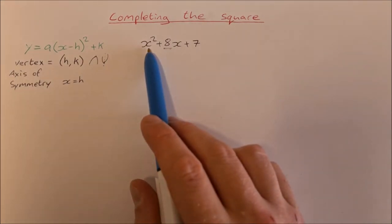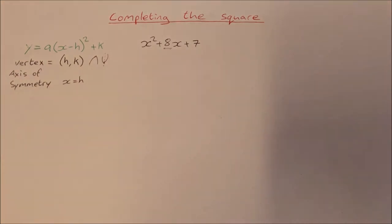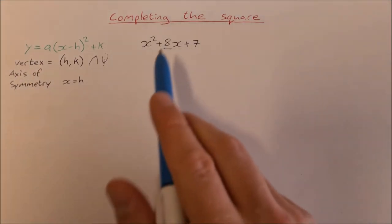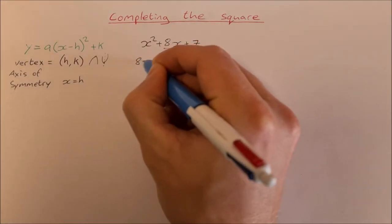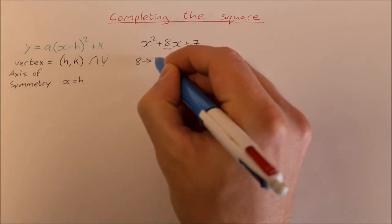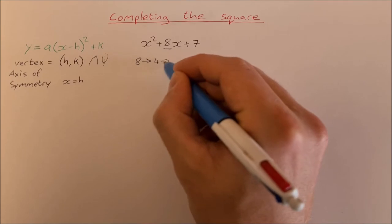I'm going to take a look at this one here, x² + 8x + 7, and complete the square and write it in completed square form. To do that, you take the coefficient of x, which is 8. First thing you do is half it, so half of 8 is 4. Then you square it, so we square 4 to get 16.